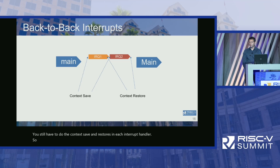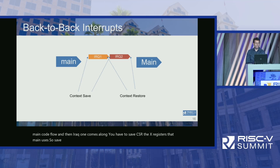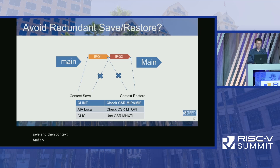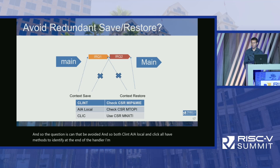Another benefit to CLIC is handling back-to-back interrupts. Your main code flow is interrupted by IRQ1, which saves X registers at the beginning and restores them at the end. If immediately followed by IRQ2, that handler does the same context save and restore. The question is: can that be avoided? CLIC, AIA local, and CLIC all have methods to identify at the end of a handler whether there's another pending interrupt, determining if you need to restore context. CLIC uses a new CSR called NextEIP for this.